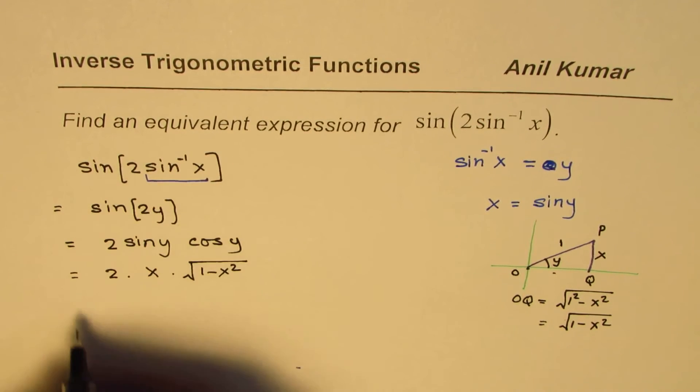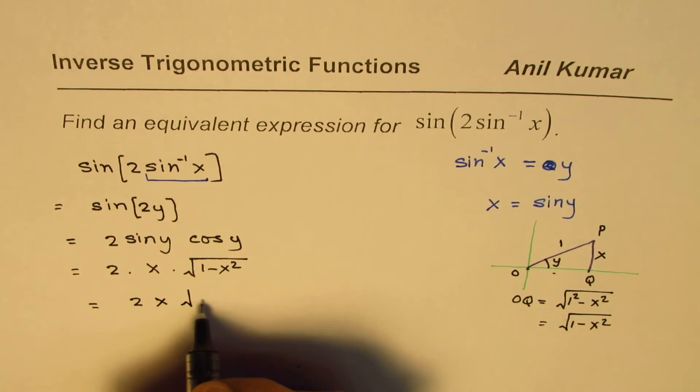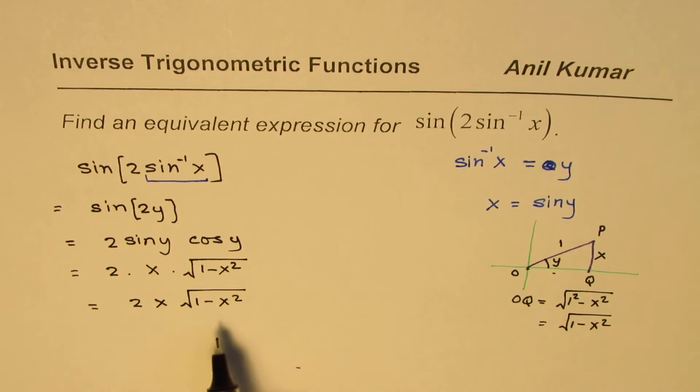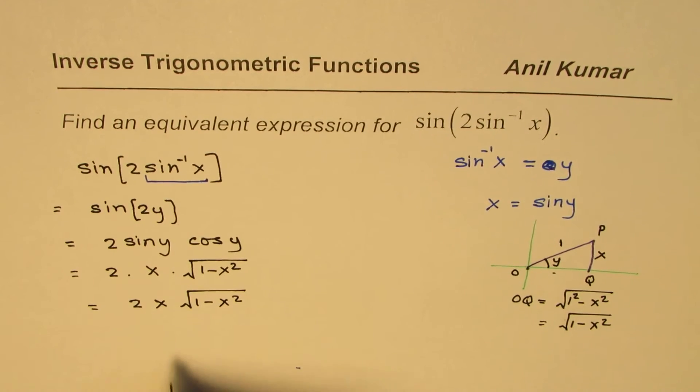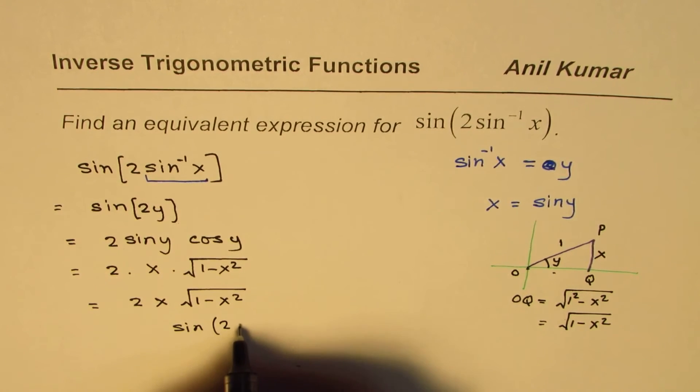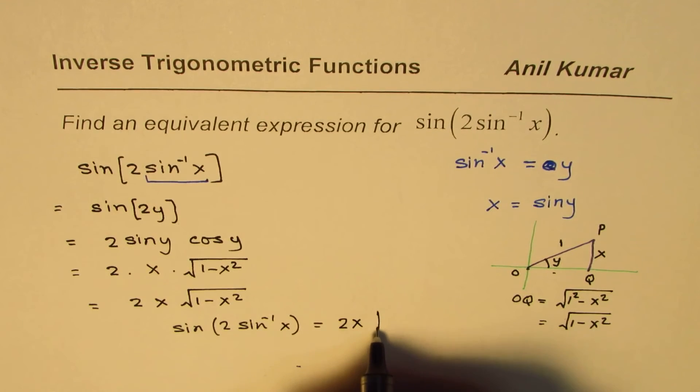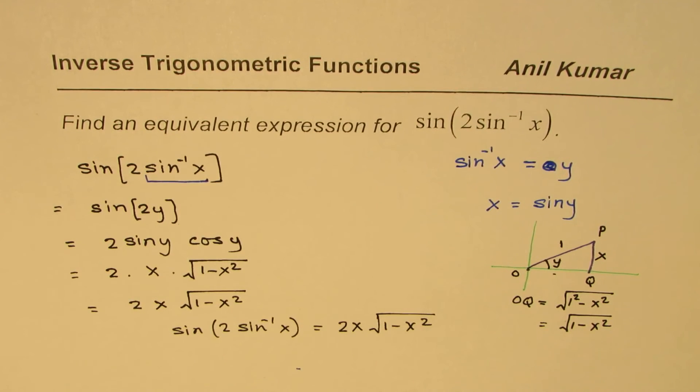And therefore, we could write this expression as 2x times square root of 1 minus x square. Now, that becomes an equivalent expression. The answer is sin(2sin^(-1)x) equals 2x square root of 1 minus x square. And that is how you can write equivalent expressions for a combination of sine and its inverse.